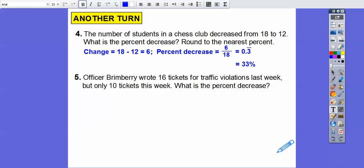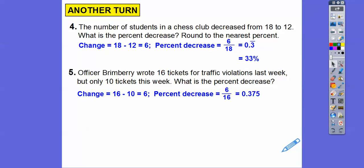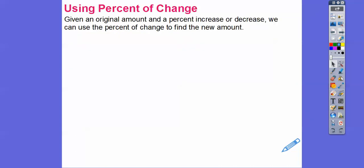Officer Brimberry, I'm sure that's a fictitious name, but Officer Brimberry wrote 16 tickets for traffic violations last week, but only 10 tickets this week. What percent decrease did it go from last week to this week? So the change is 16 minus 10, or 6. Now, the original number is 16. So we take that and divide it by 16 and get 0.375. This one does not say round to the nearest percent. So I'm just going to move that decimal over two places to the right. So when I do that, it's going to be 37.5% decrease. All right. Whoops, I'm sorry. That was my ring hitting my table.